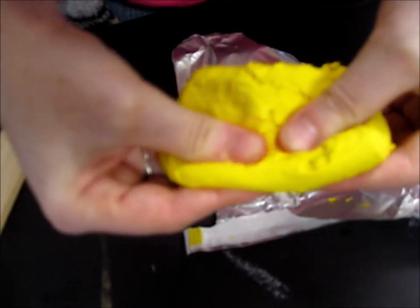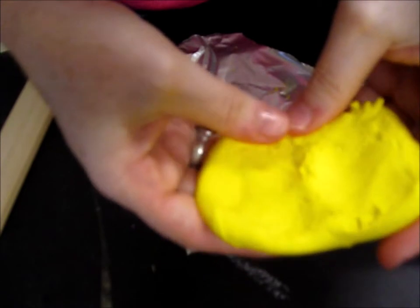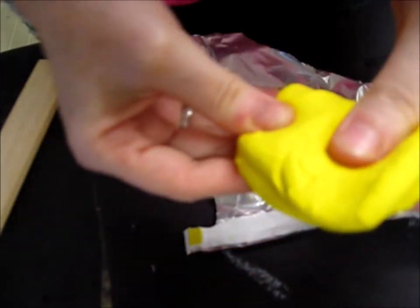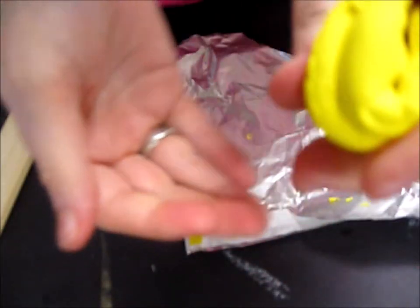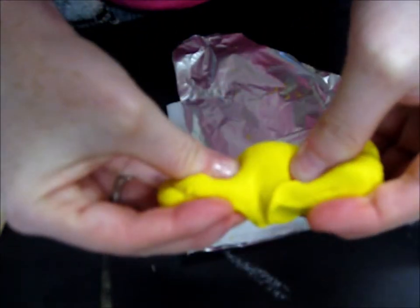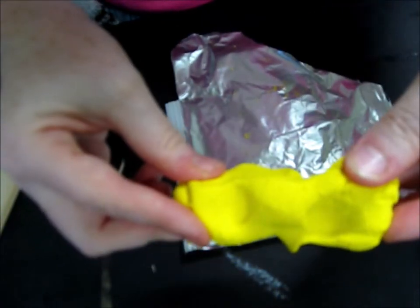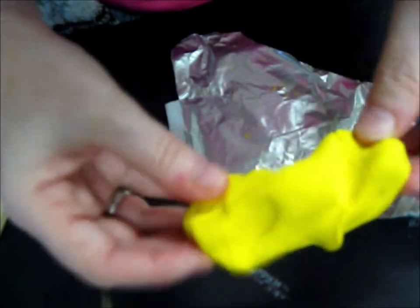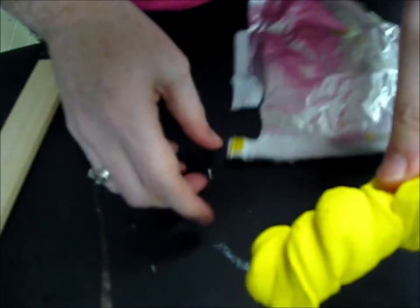To take the clay out, it can stick to itself. So dab it on the inside of the container to get out the little bits that are stuck behind. Working with fine motor skills is important to develop good occupational therapeutic muscles. Mold it and shape it as you wish.